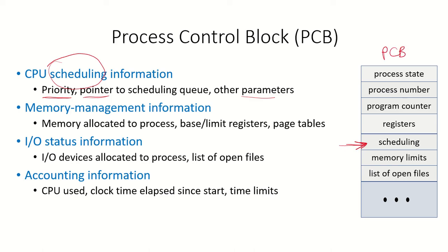Memory management information is also stored here. Some memory is allocated to the process — so what are the base and the limit? That means what is the starting address of the process and what is the maximum address that process has been assigned? There is also an entry into the page table, which we will discuss later, but this is a way of telling where in memory that process exists. All this information is also put in the PCB.